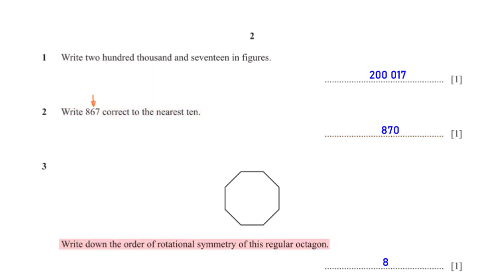Write down the order of rotational symmetry of this regular octagon. The order of rotational symmetry for a regular octagon is eight.